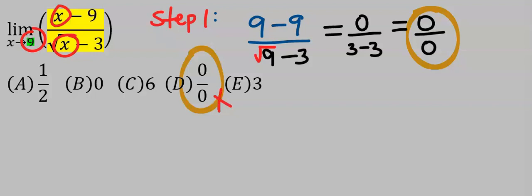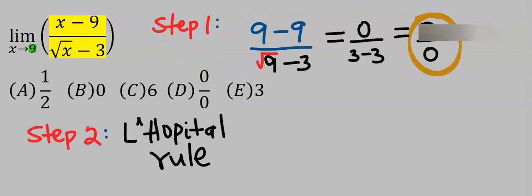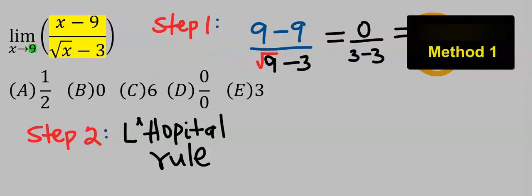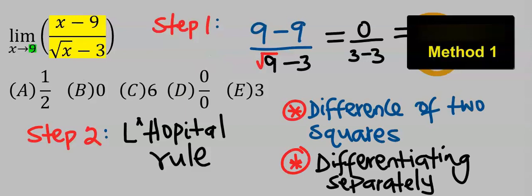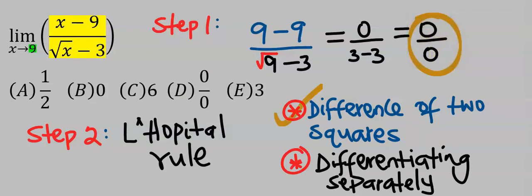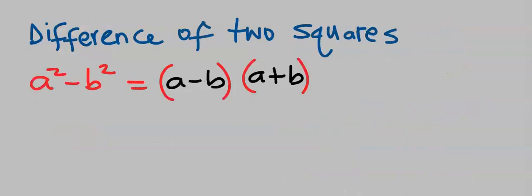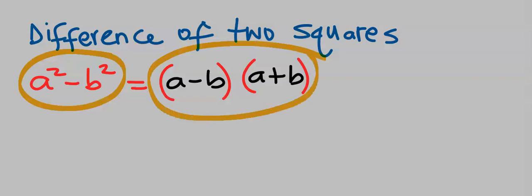Next apply L'Hôpital's rule and here we got two options: either to use difference of two squares or we differentiate each variable separately. By difference of two squares, a squared minus b squared will give you (a minus b) in brackets (a plus b) in brackets.